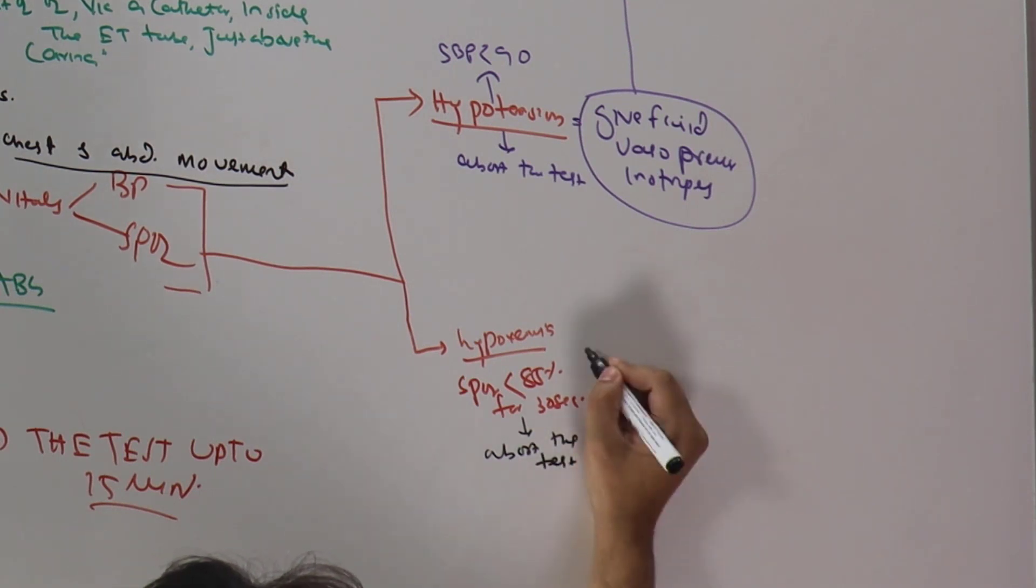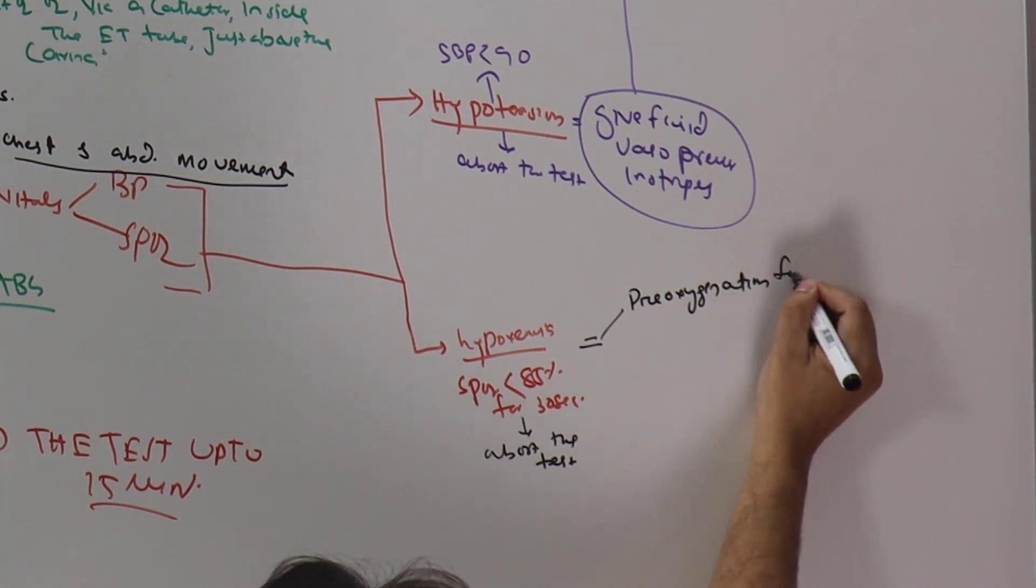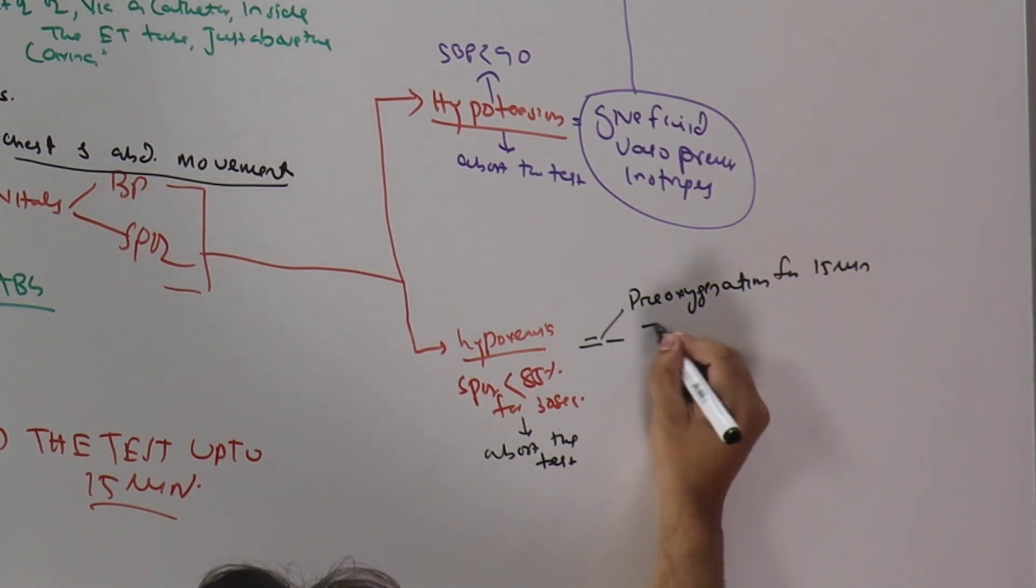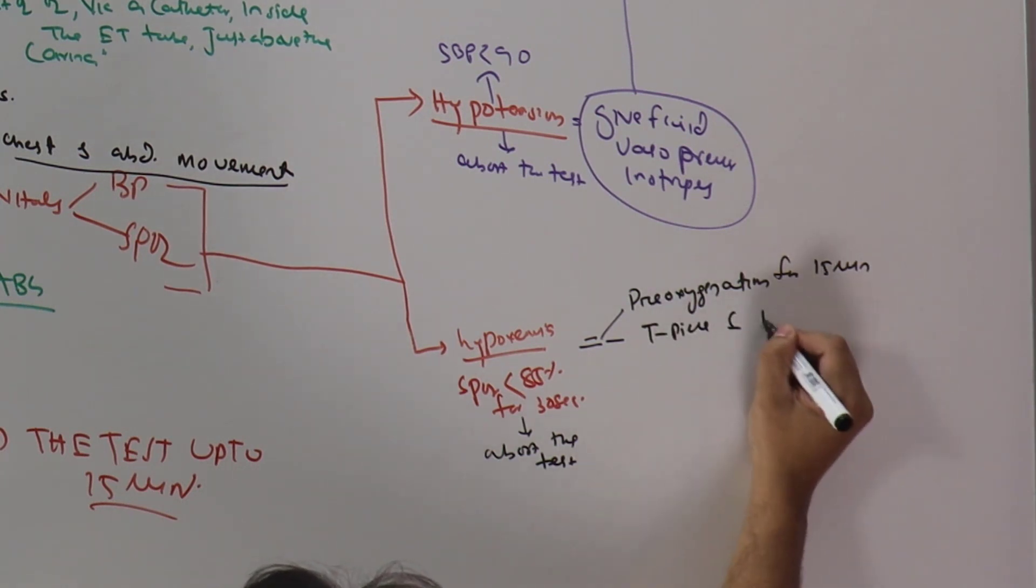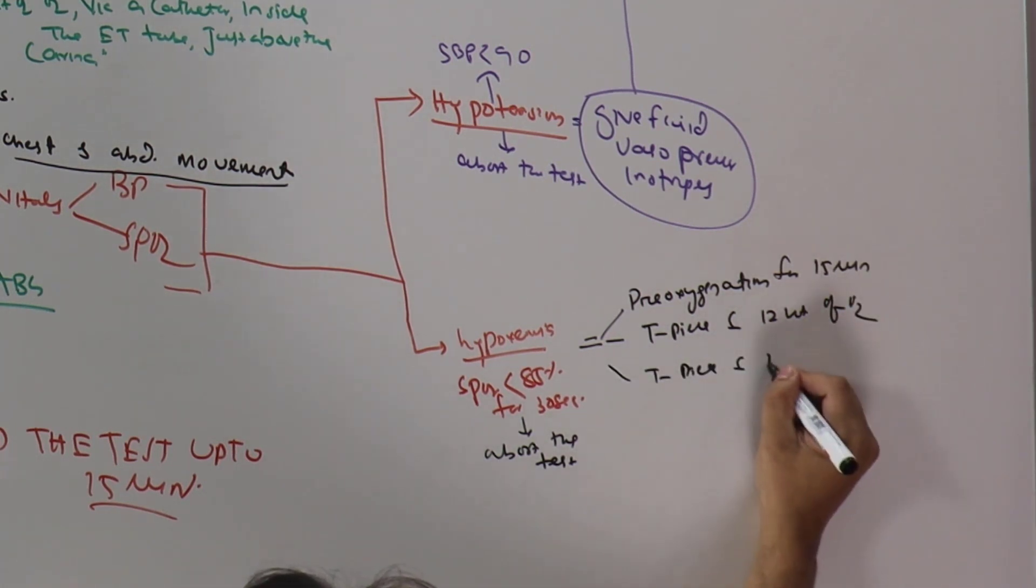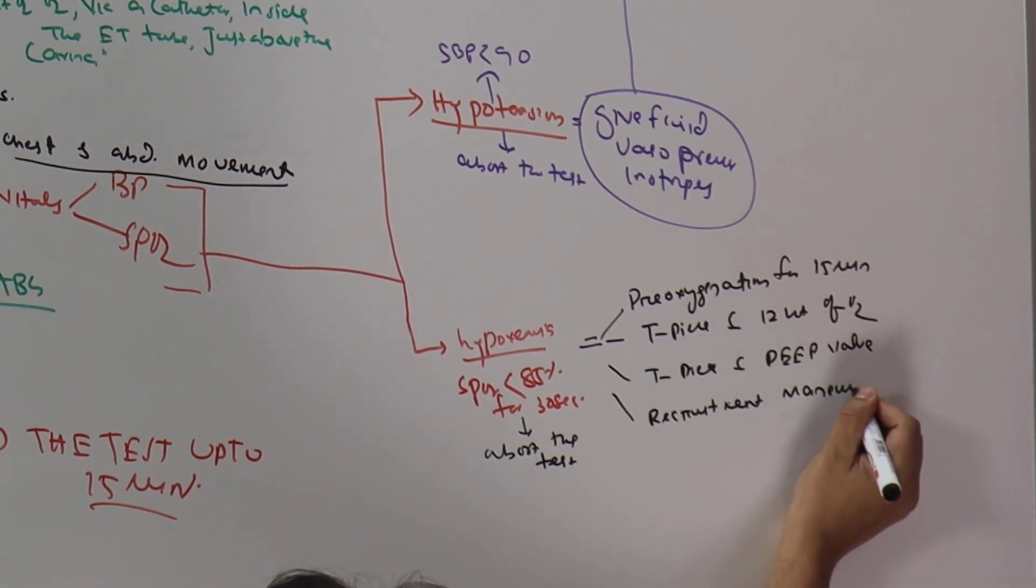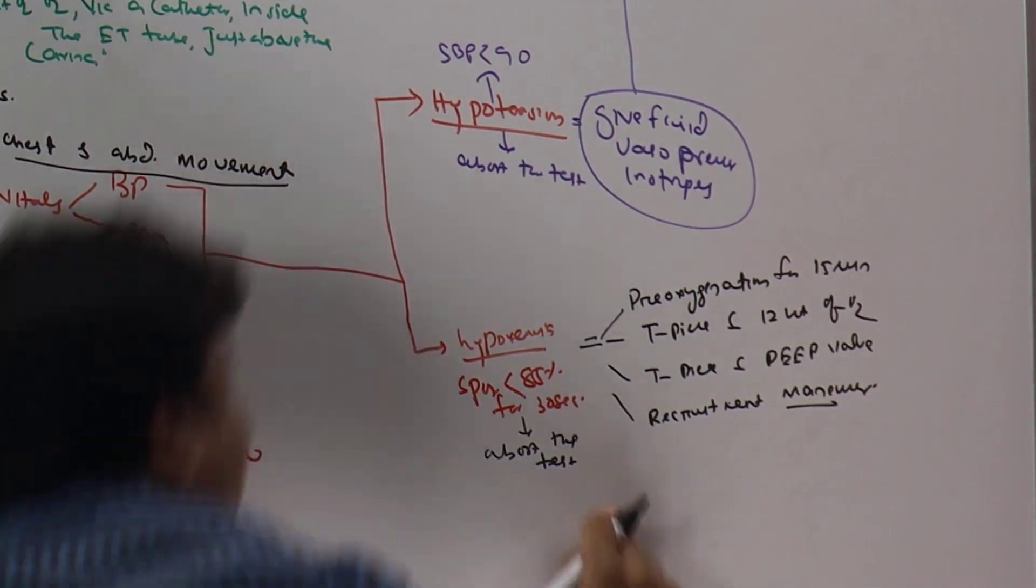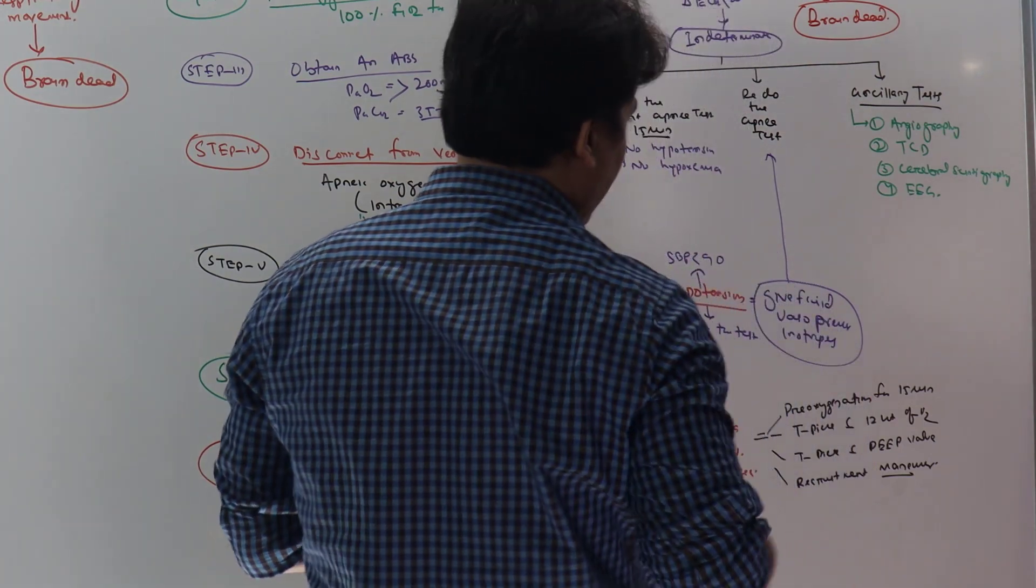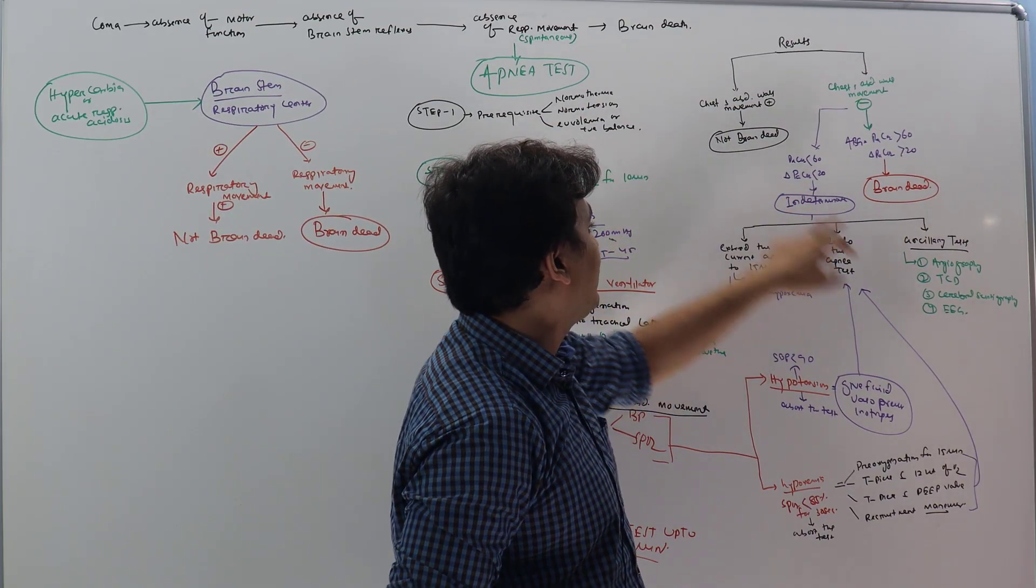And then fix it. How to fix it? We can use pre-oxygenation for 15 minutes. We can use a T-piece with 12 liters of oxygen. We can use a T-piece with PEEP valve, or you can do recruitment maneuver just prior to doing the apnea test. You have to fix the hypoxemia, and once it is fixed, we have to redo the apnea test. Again, if the result comes indeterminate, we can go ahead and do the ancillary test.